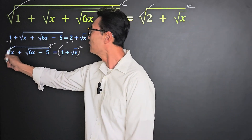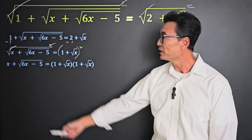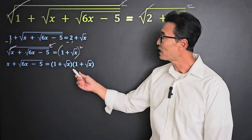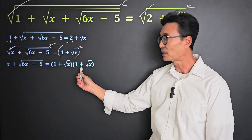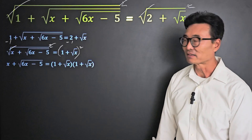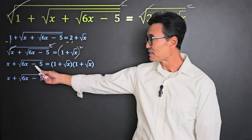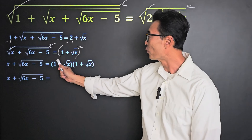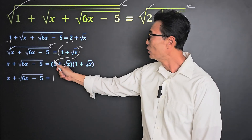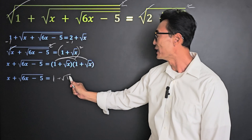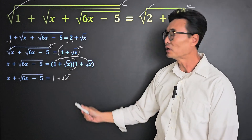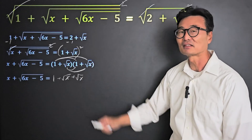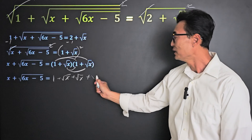First, let's go ahead and cancel off the square and the square root sign, leaving us with x plus root 6x minus 5. On the right side, I rewrote this as 1 plus root x times 1 plus root x. Leaving the left side exactly the way it is, on the right side let's go ahead and multiply. Where we multiply 1 times 1 we get 1, 1 times root x gives us root x, and then root x times 1 gives us root x. And then lastly, root x times root x we end up with x.